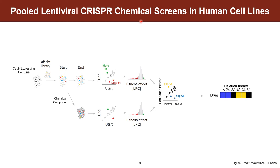To approach this in human cell lines, we employ a pooled lentiviral CRISPR screen approach. Briefly, you take a Cas9 expressing cell line, you transduce a genome-wide guide library, and at the start of the screen, you split this into a control versus drug arm. You let the screen run out over a certain amount of time, and at the end of the screen, you isolate the DNA and send it off to next generation sequencing. The results that you get back are guide abundances that act as a proxy for cell fitness. So you're able to quantify the fitness effect of end versus start of the screen for both the control and the drug arm. And then taking the differential log fold change effect, you're essentially getting your CGI scores.